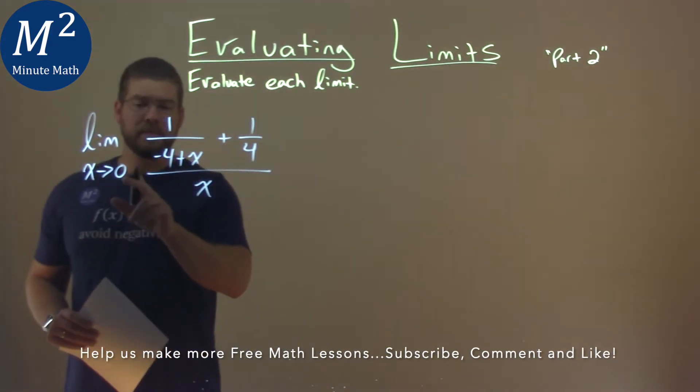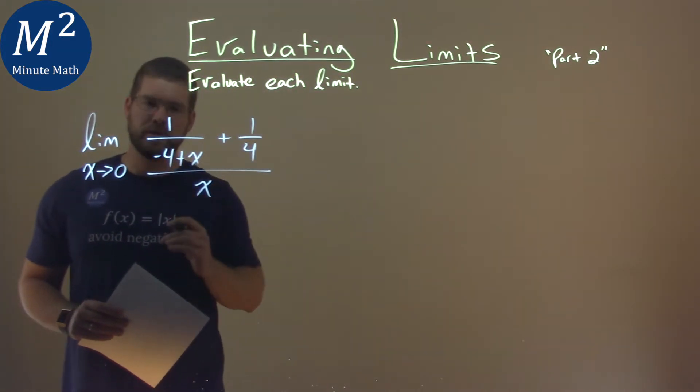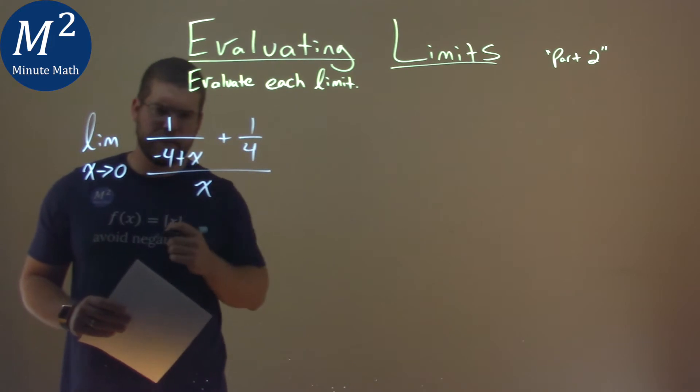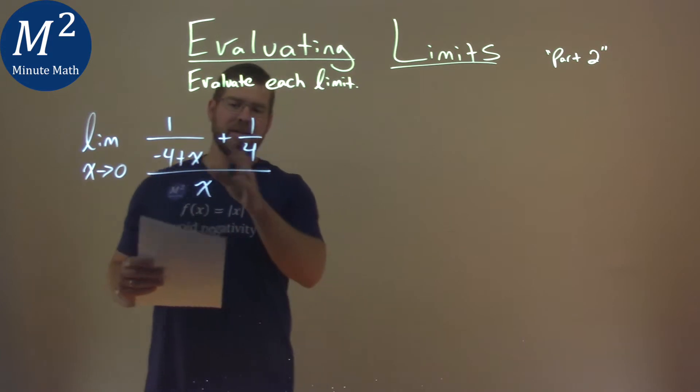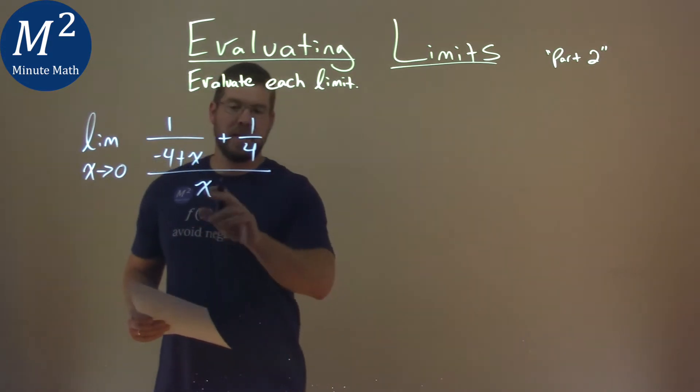One thing we know right off the bat, 0 in for x causes some issues. We cannot divide by 0. So I'm going to try to rearrange, combine these fractions, and maybe we can do something that simplifies and crosses out this x down here.